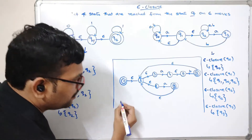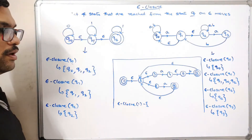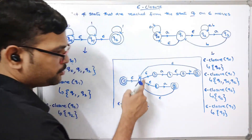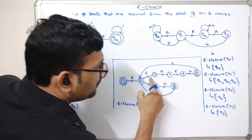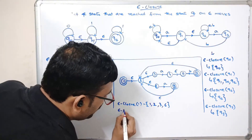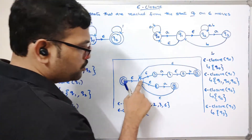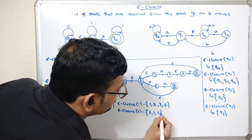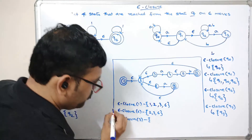Now for the third example with states numbered 1 through 8. Epsilon closure of 1: from state 1 there are epsilon moves to 2, from 2 to 3, and from 2 to 6, so epsilon closure of 1 is {1, 2, 3, 6}. Epsilon closure of 2: from state 2 the epsilon moves go to 3 and to 6, so epsilon closure of 2 is {2, 3, 6}.